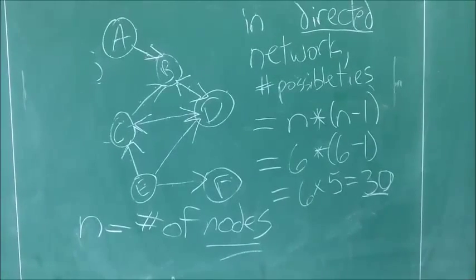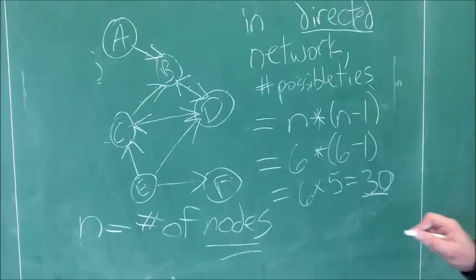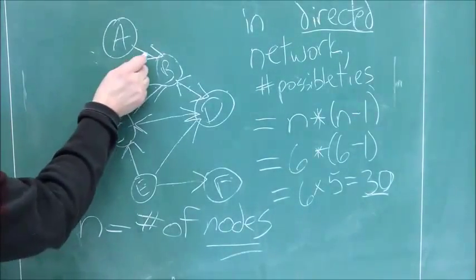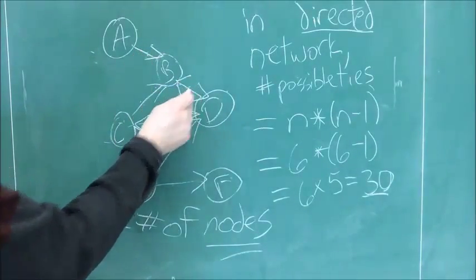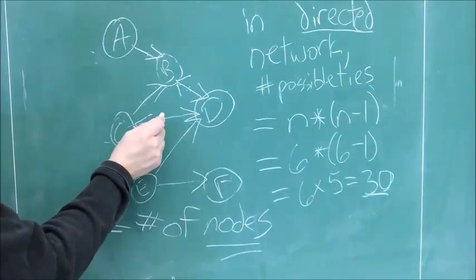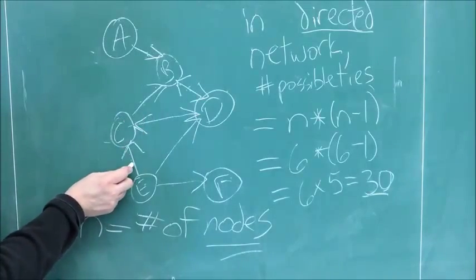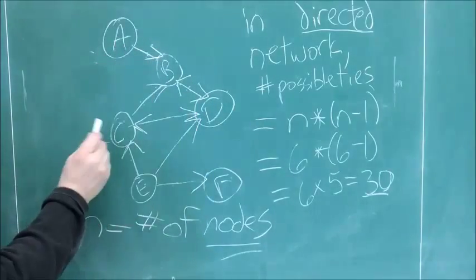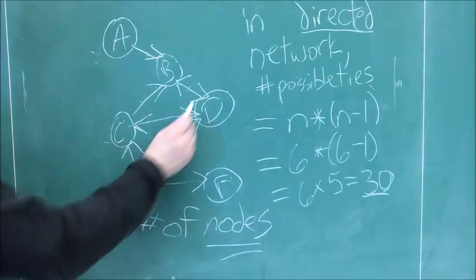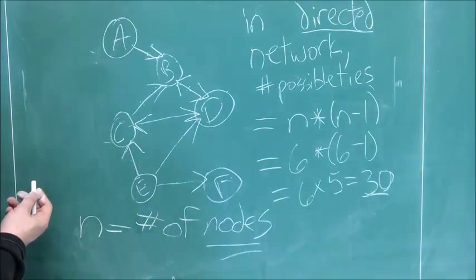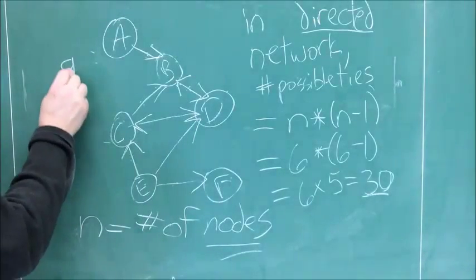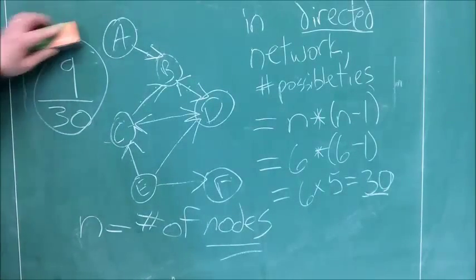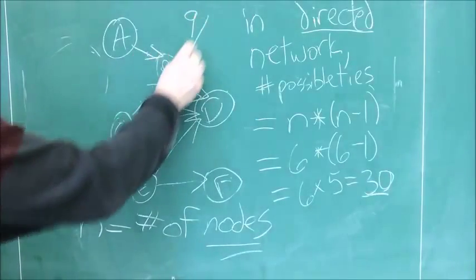Now, we just need to figure out how many actual ties there are. Let's count them. Make sure to count the double-headed arrows twice, because that's actually two ties. 1, 2, 3, 4, 5, 6, 7, 8, 9. So, we have 9 actual ties, 30 possible ties. And so, our fraction for density is going to be 9 divided by 30, which simplifies to 3 divided by 10, or 30% full.